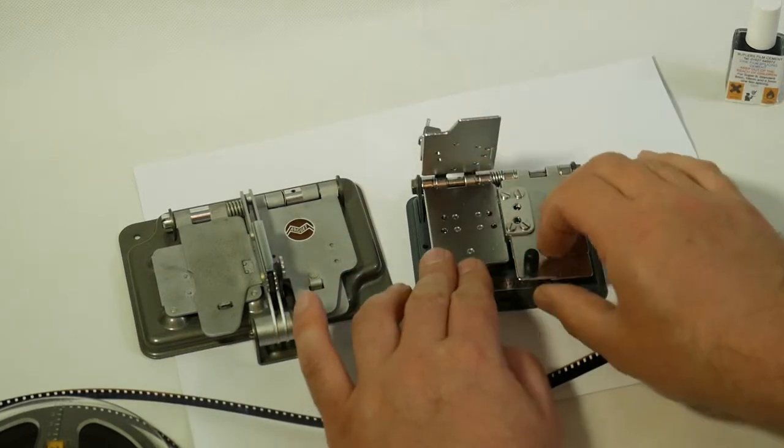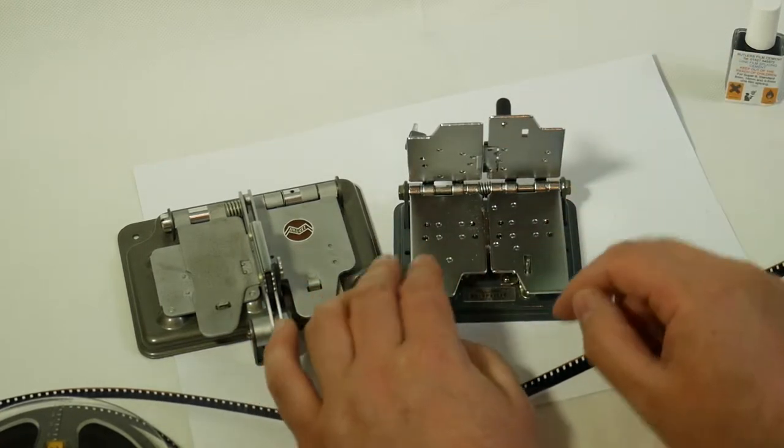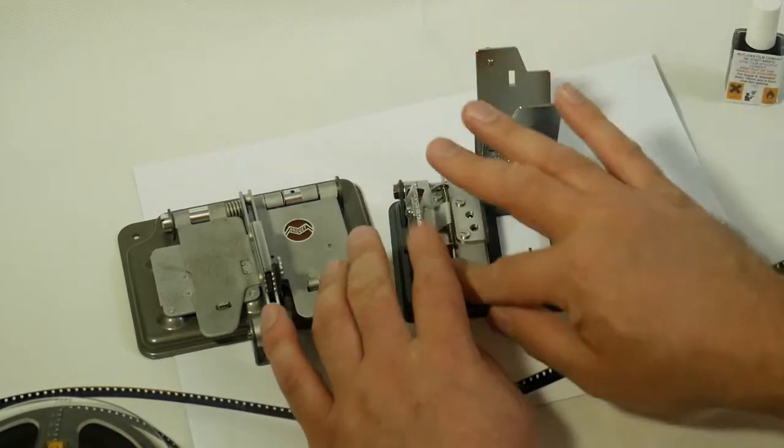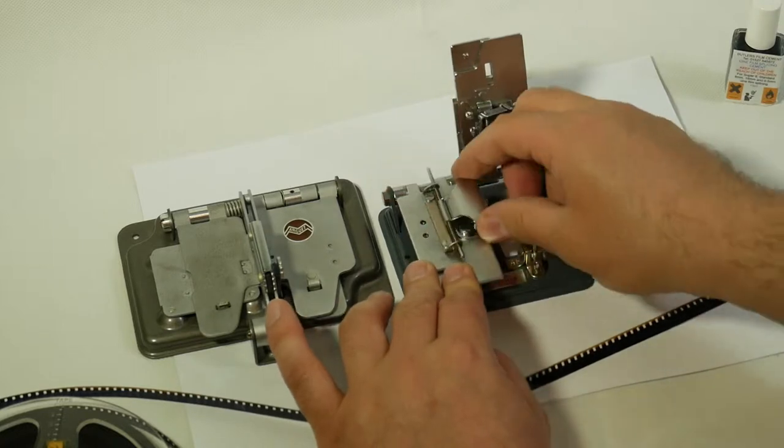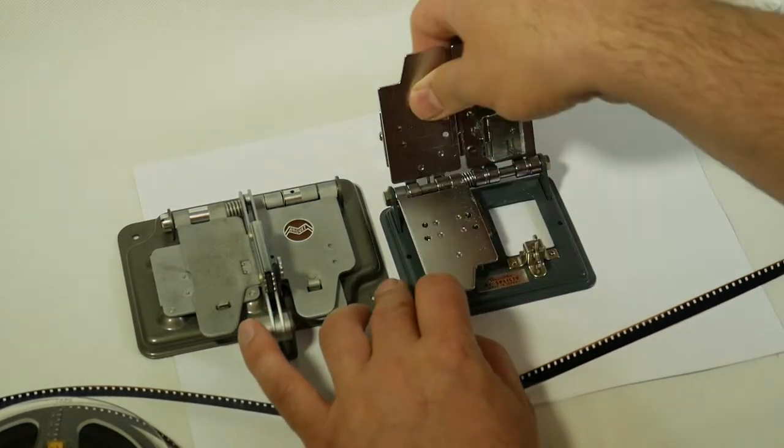They've usually got two plates where you put the film to join together. There's usually a scraper built in so you'd be able to remove the emulsion from the side of the film. We'll show that in a minute.